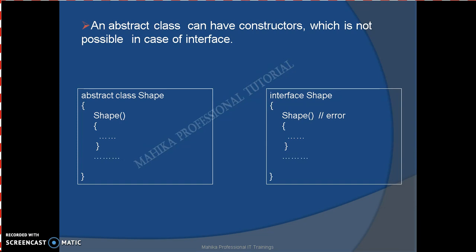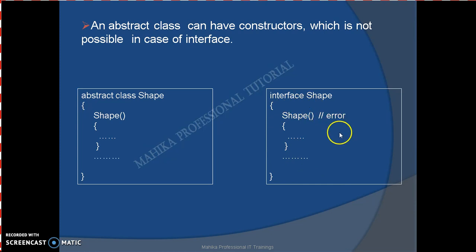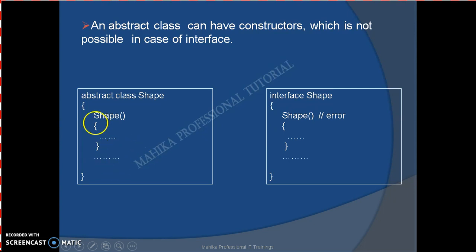The very first difference between an abstract class and an interface is that an abstract class can have constructors, which is not possible in case of interface. If you try to declare a constructor in an interface, it will give an error. Basically, a constructor is invoked implicitly whenever we create the instance of a class, and we know that an interface cannot be instantiated, so this constructor cannot be called. Therefore we are not allowed to write a constructor inside an interface. Whereas if there is a constructor in an abstract class, abstract classes can be extended and whenever the constructor of the subclass fires, it will implicitly execute the constructor of the superclass. So we can have a constructor in an abstract class, but we cannot have a constructor in an interface.